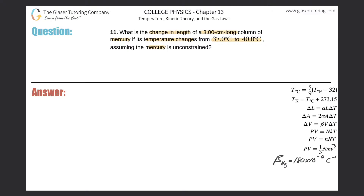We're dealing with mercury, and given the temperature range, we know mercury is a liquid at this particular temperature. Let's draw a little picture — pretend mercury is in a tube. It's in a cylindrical tube; it doesn't really matter what the shape is, but let's say it's cylindrical.